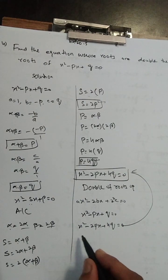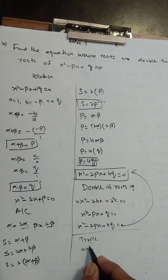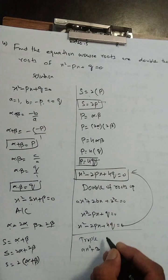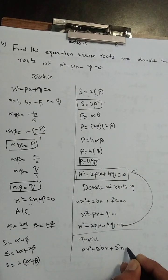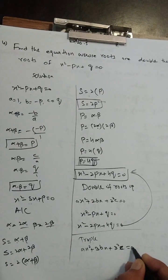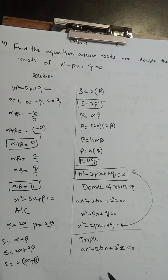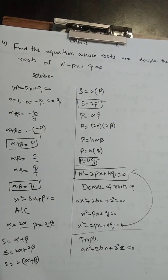Dekhen jo humne equation banahi, usi tarah triple of roots ka formula hai: ax² + 3bx + 3²c = 0. Jab triple karna hoga to middle term ko 3 se multiply karenge.